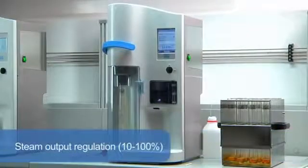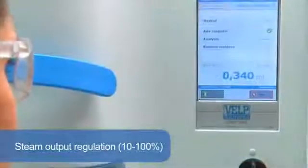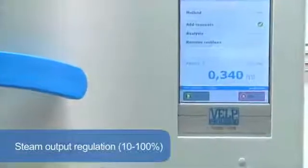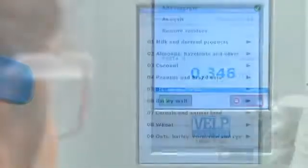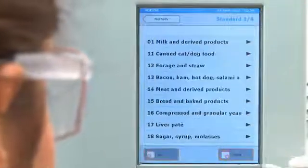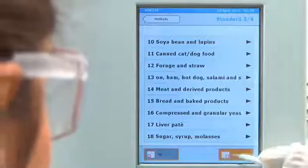Variable steam output regulation, 10-100%, enables the UDK 159 to respond to the needs of many applications, including alcohol, volatile acids, phenols, sulfites, and TVBN determination.